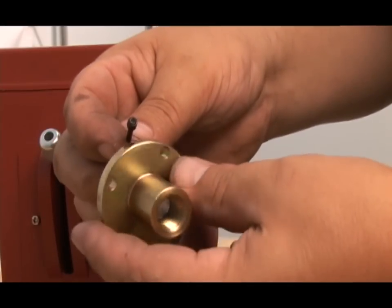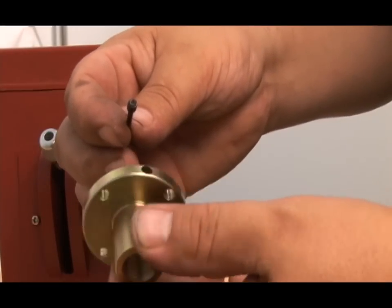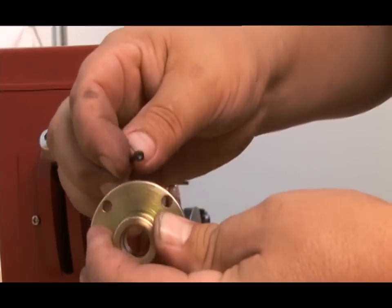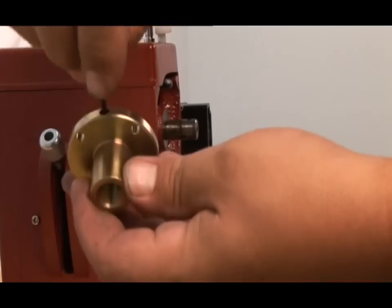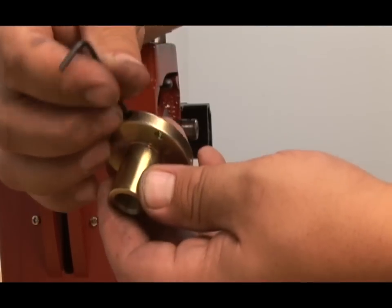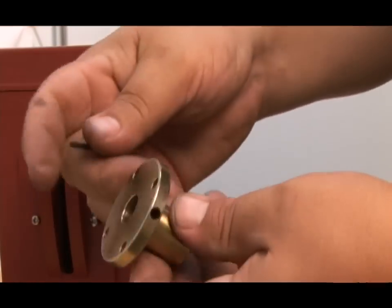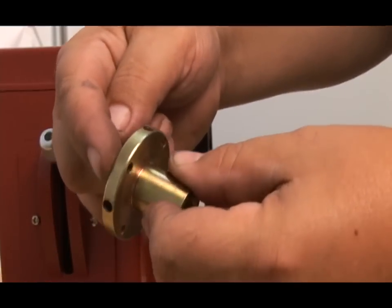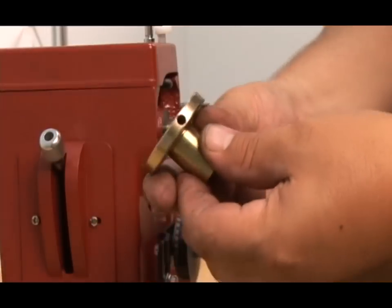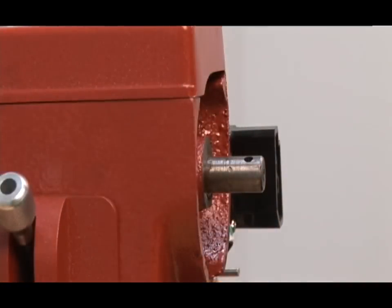Now take the bushing and install the set screws. There are two of them at almost 45-degree angles. Use a 3/32 Allen wrench to screw them into the bushing. Don't screw them all the way through, just enough to keep them in place.